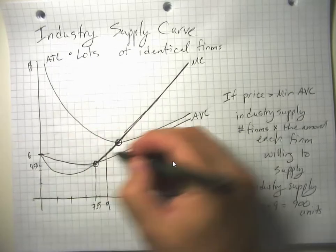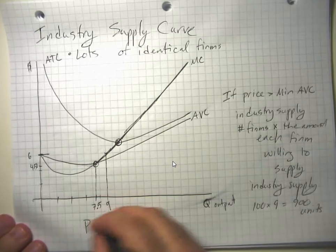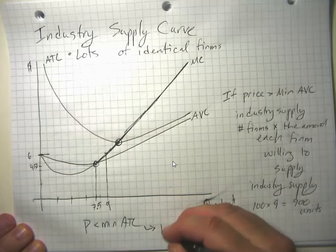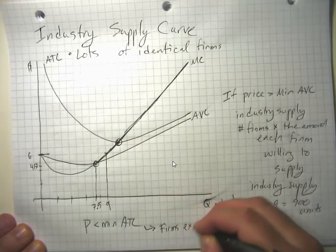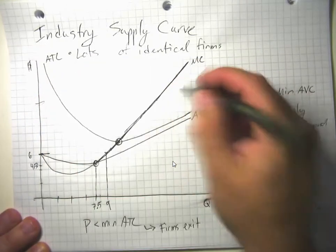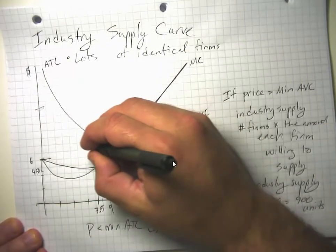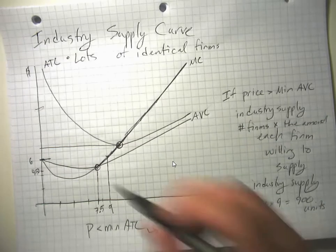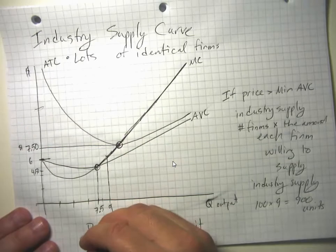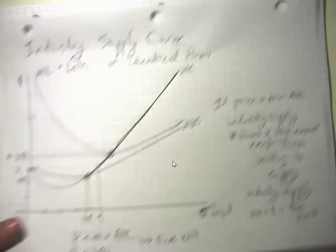In the long run, a price of $6 doesn't allow these firms to break even. So if price is less than the minimum of average total cost, firms are going to exit the industry. On the other hand, if price is above the minimum of the average total cost curve, firms would be making economic profit and entering the industry. For this example, the minimum of average total cost is $7.50. So if price is less than $7.50, firms are going to exit the industry.